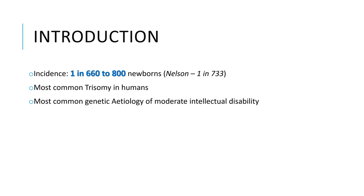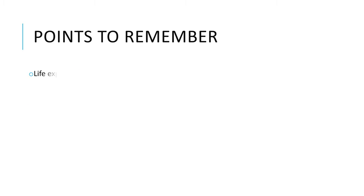Down syndrome has an incidence of one in 660 to one in 800 newborns; according to the Nelson Textbook of Pediatrics, this is one in 733 newborns. It is the most common trisomy in humans and the most common genetic etiology of moderate intellectual disability. The life expectancy of a person with Down syndrome is typically 50 to 55 years.